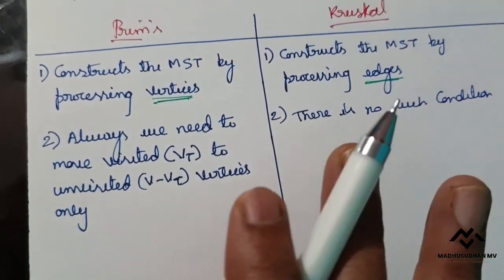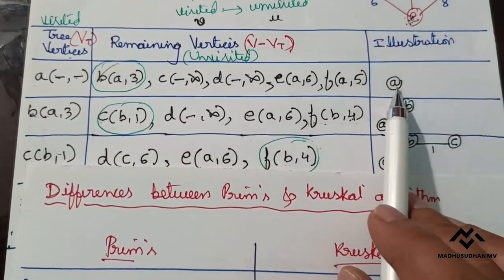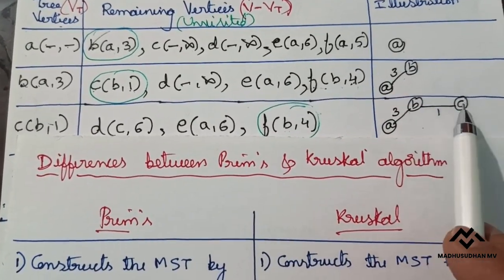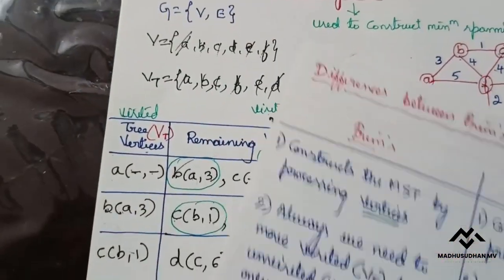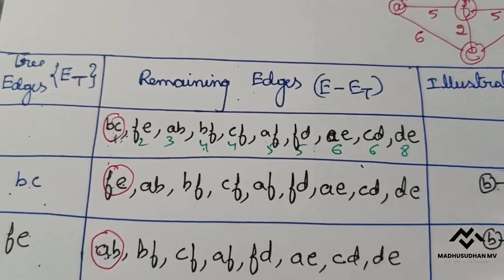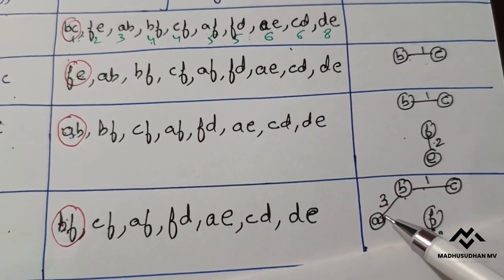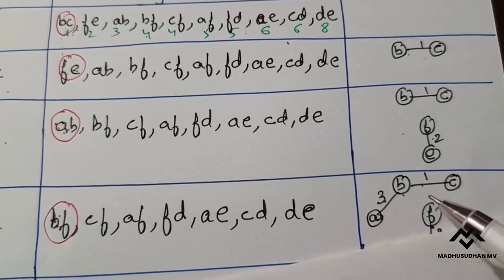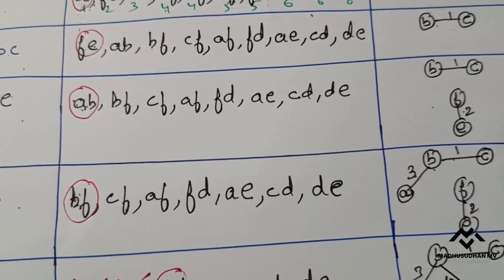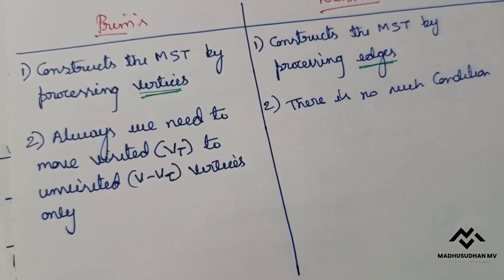For example, in Prim's algorithm: vertex A is visited, then we move to an unvisited vertex — always visited to unvisited. Whereas in Kruskal's algorithm, first both B and C are unvisited, then F to E both are unvisited, then A to B where B is visited and A is unvisited. All these combinations are possible — there is no such condition in Kruskal's algorithm.